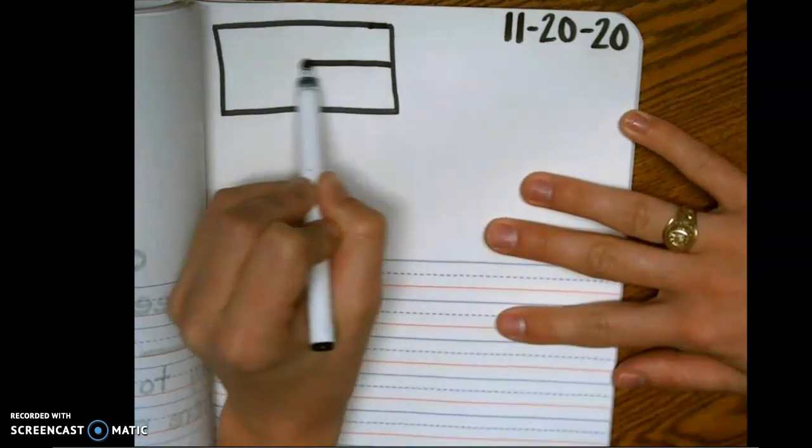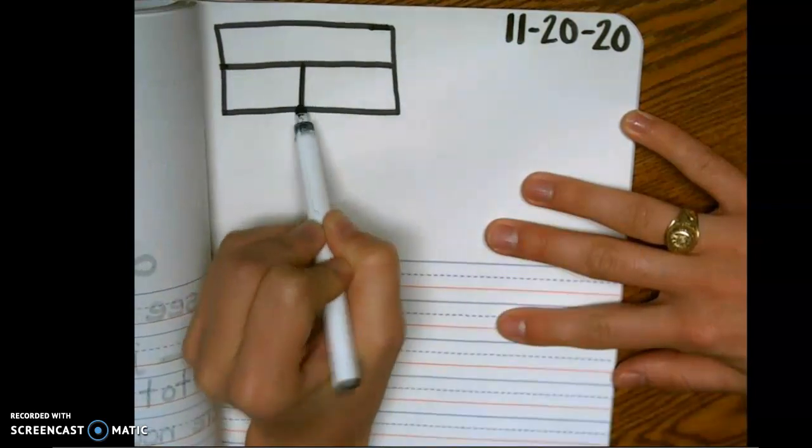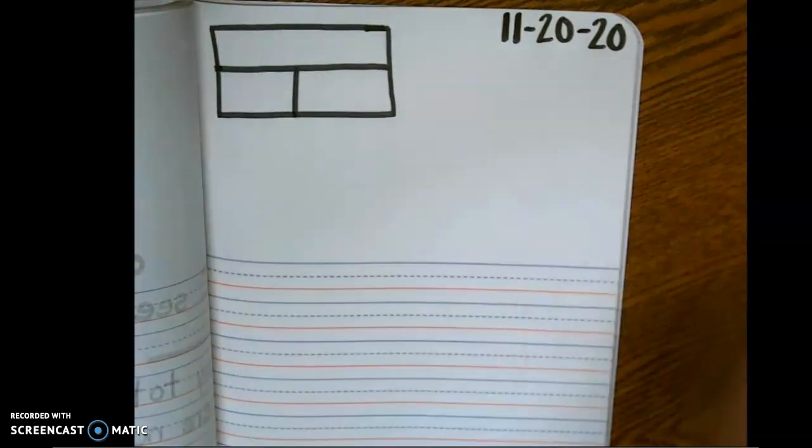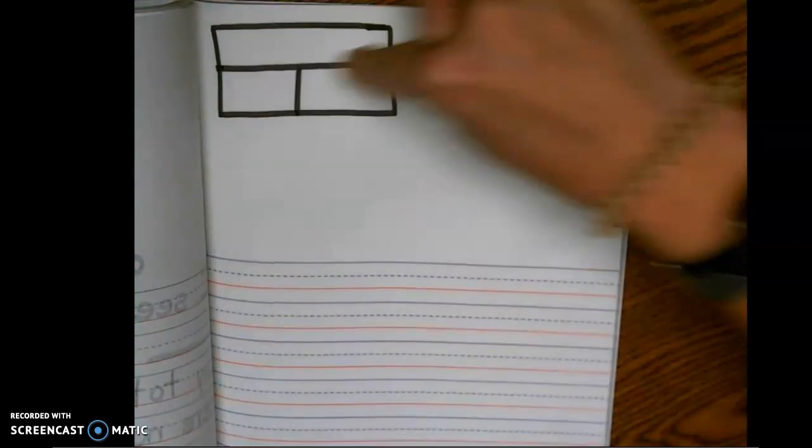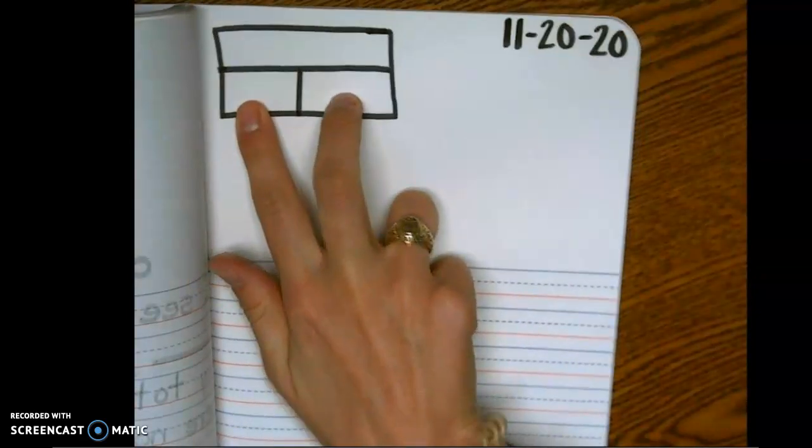Then I want you to draw a line across and a line going down. This is very similar to our number bonds where we have our whole up here and then our two parts.